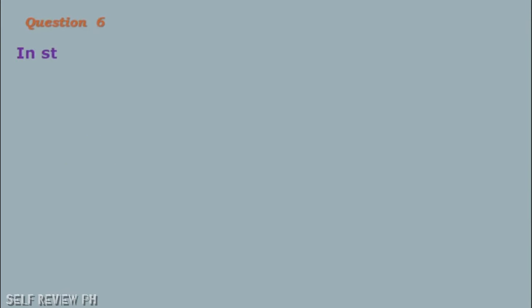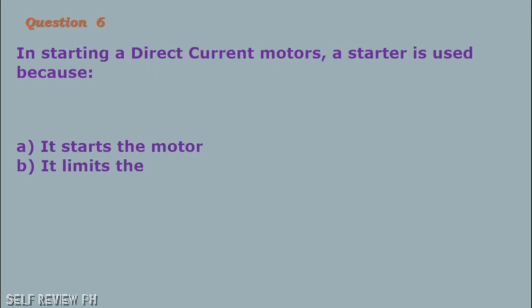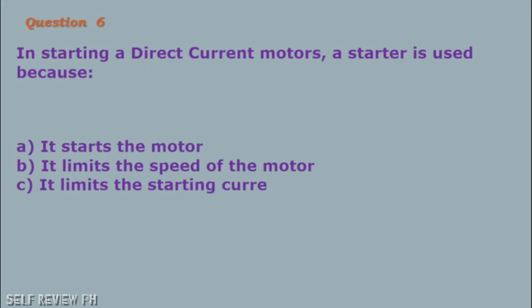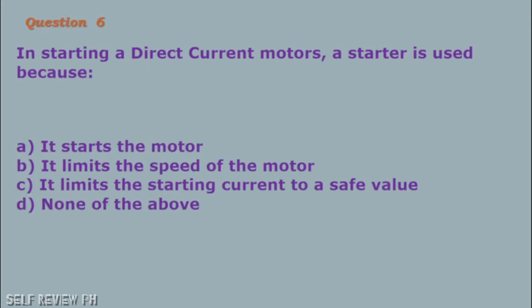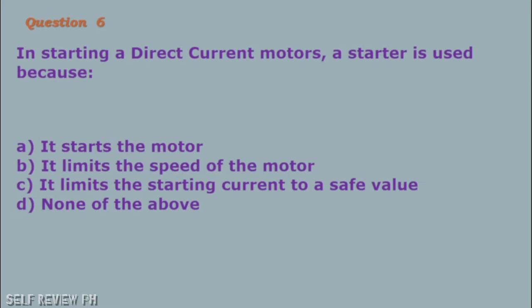Question number 6: In starting a direct current motor, a starter is used because: A. It starts the motor B. It limits the speed of the motor C. It limits the starting current to a safe value D. None of the above. The correct answer is letter C, it limits the starting current to a safe value.